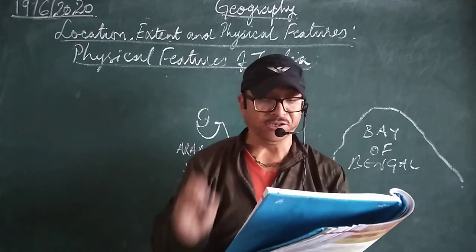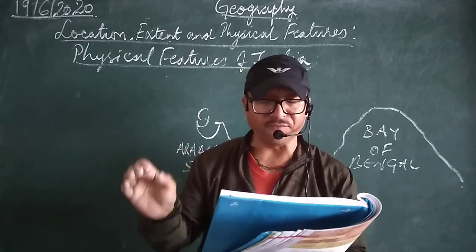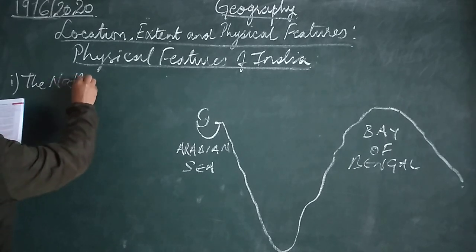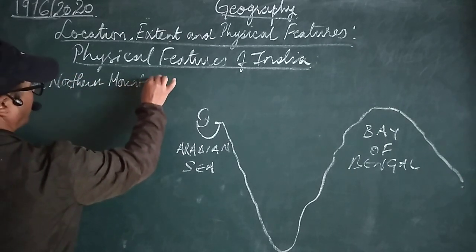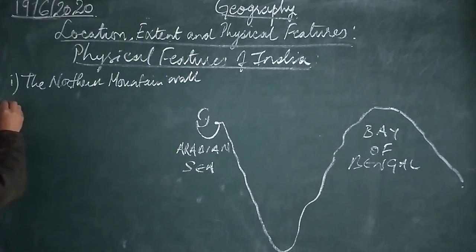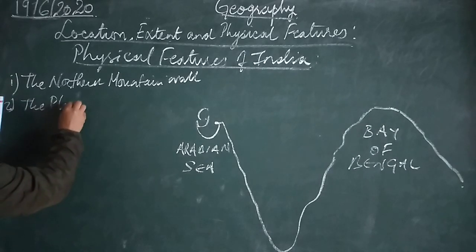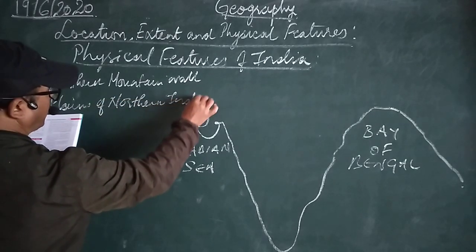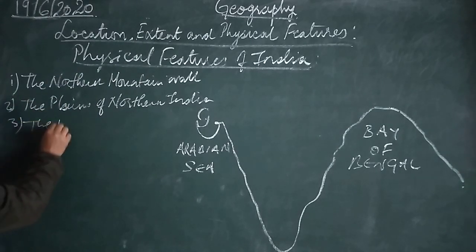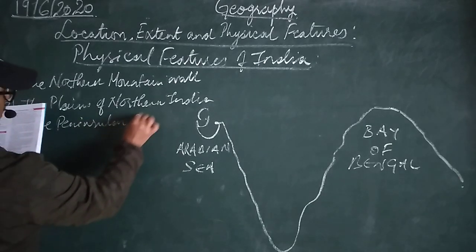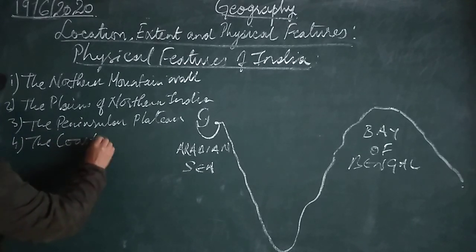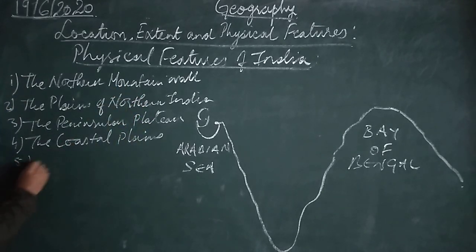The Indian subcontinent has five clearly defined physiographic divisions: number one, the Northern Mountain Wall; number two, the Plains of Northern India; number three, the Peninsular Plateau; number four, the Coastal Plains; and number five, the Islands.